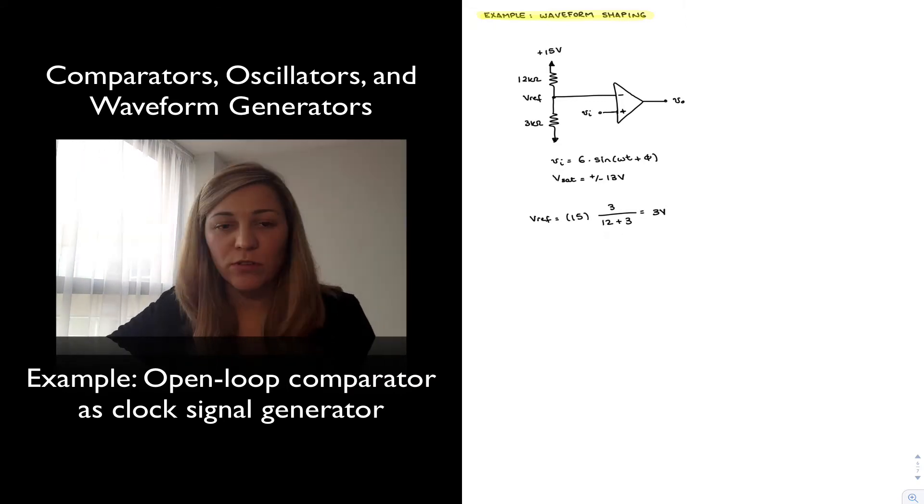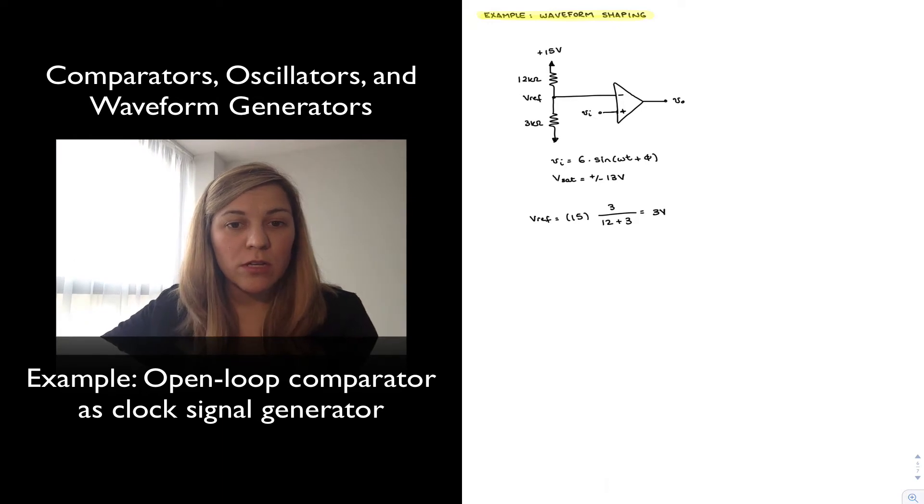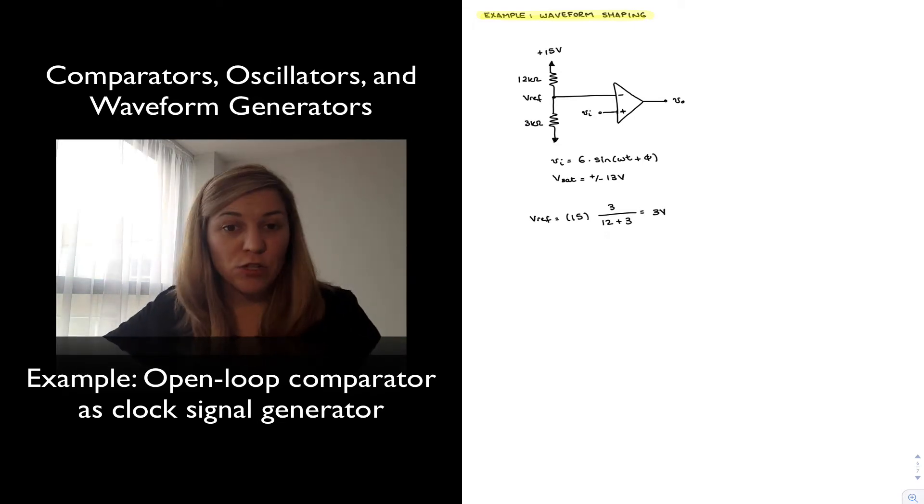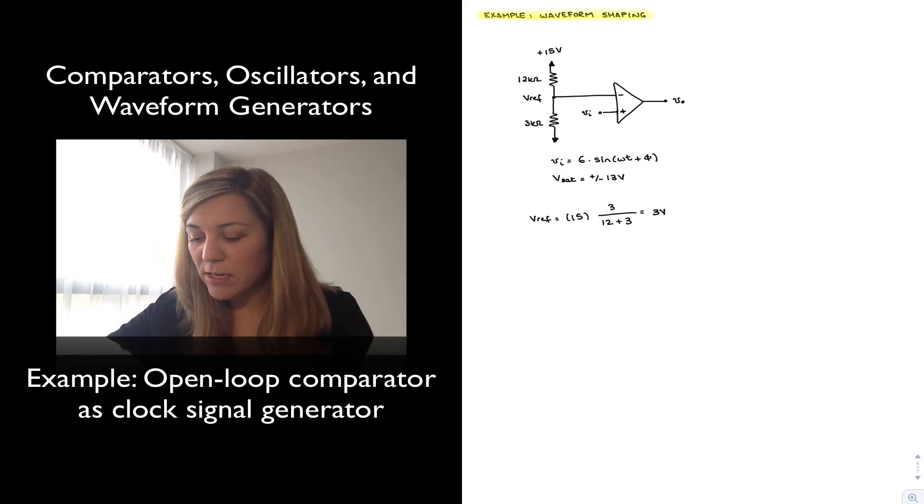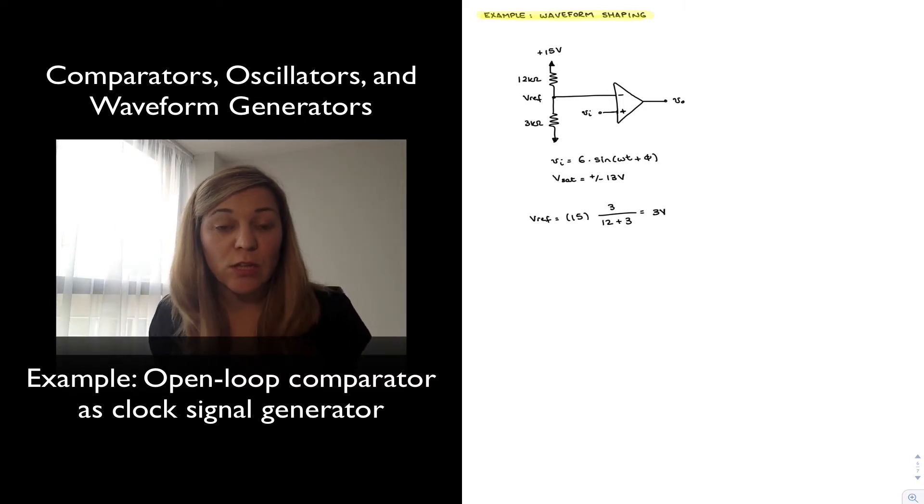Basically the output of this comparator we expect it to be a square signal if my input is a sinusoidal signal. The output is going to have two levels, high or low, and it's going to be high whenever my input signal is higher than the reference voltage and low whenever my input signal is lower than the reference voltage.